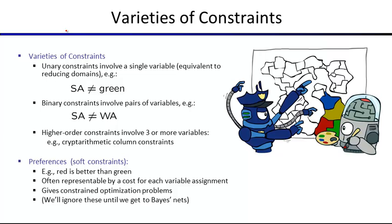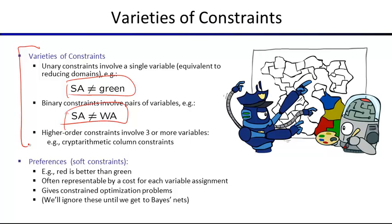Constraints can vary in scope: a unary constraint involves only one variable — for example, South Australia cannot be green. A binary constraint involves two variables — for example, two territories cannot be the same color. Higher-order constraints involve more than two variables and require constraint boxes in the graph. Currently we handle only hard constraints, but in the future we'll extend to soft constraints representing preferences.